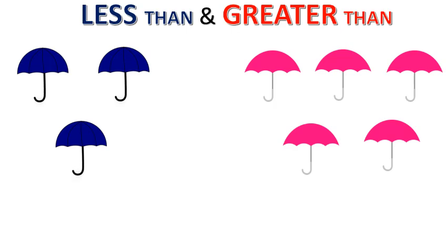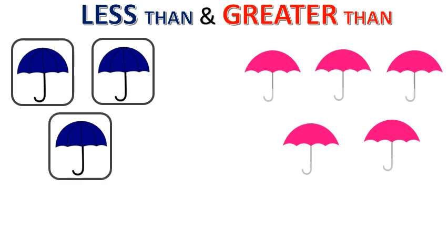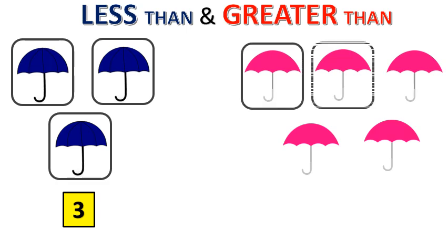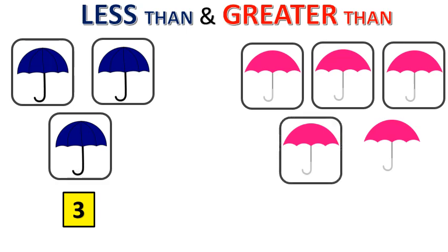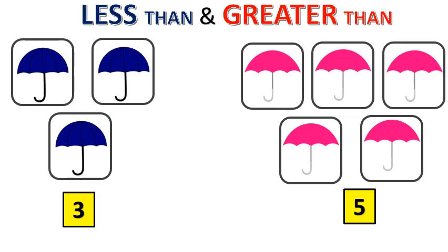Now let's consider the given examples. Here we have a set of blue umbrellas and pink umbrellas. Let's count them: 1, 2 and 3. So we have 3 blue umbrellas. Now let's count the pink umbrellas: 1, 2, 3, 4, 5. So we have 5 pink umbrellas. You have to find which one is greater than and which one is less than — either 3 or 5.